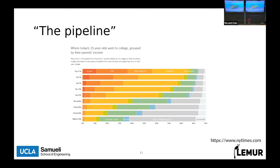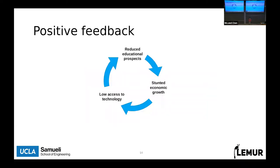Lower educational opportunities in one generation pass themselves down and percolate through. What we end up with is a feedback loop: reduced access to education leads to reduced economic opportunities, which means fewer resources in your family and community, which then feeds back into lower educational opportunities. Access to technology is the core driver behind this cycle, both in education and in society as a whole.